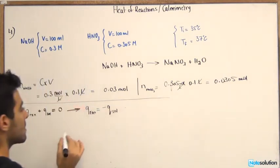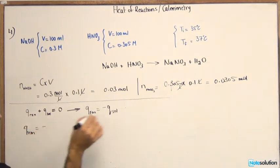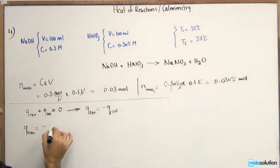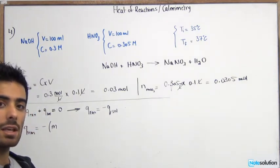So now let's find out the Q solution in order to find the Q reaction. So it's negative Q solution. Q solution is the mass of water. Now the mass of water when it's not given to you.